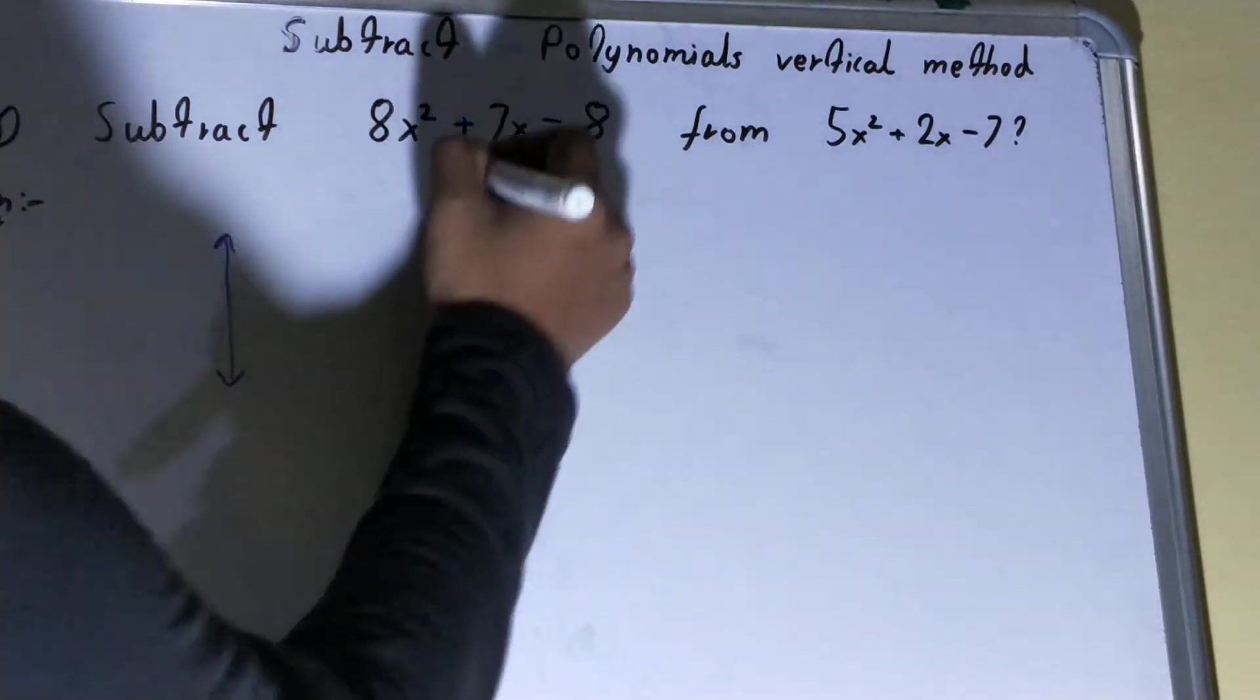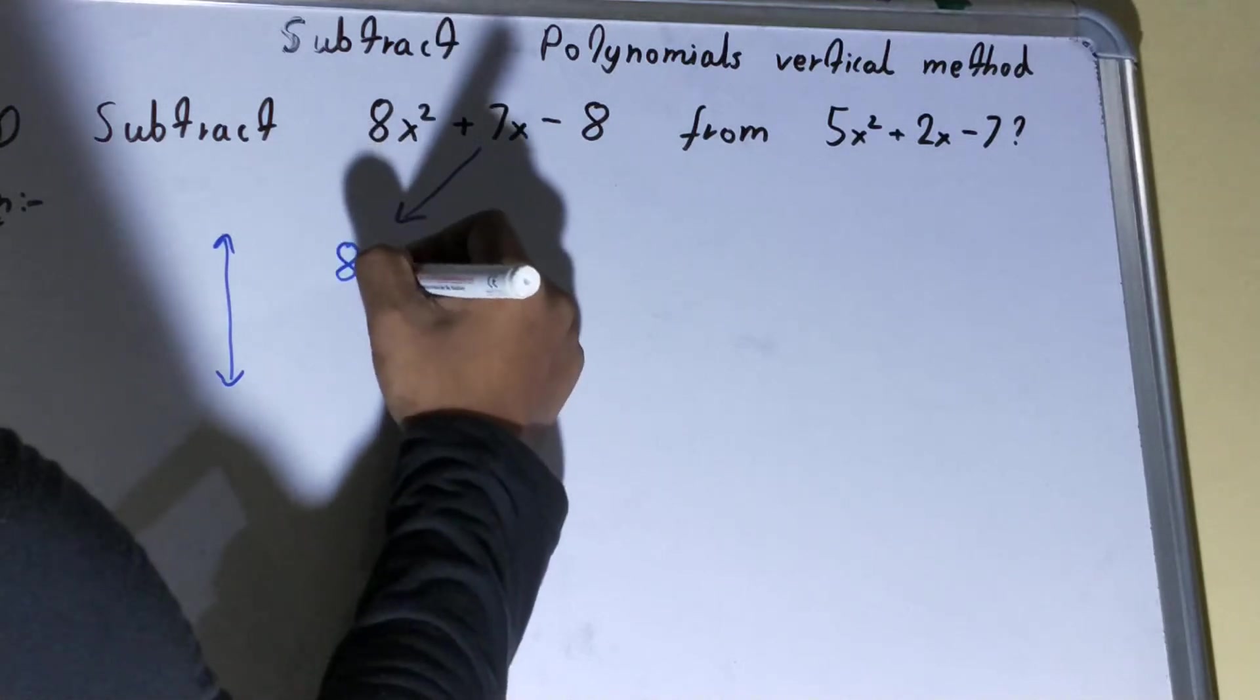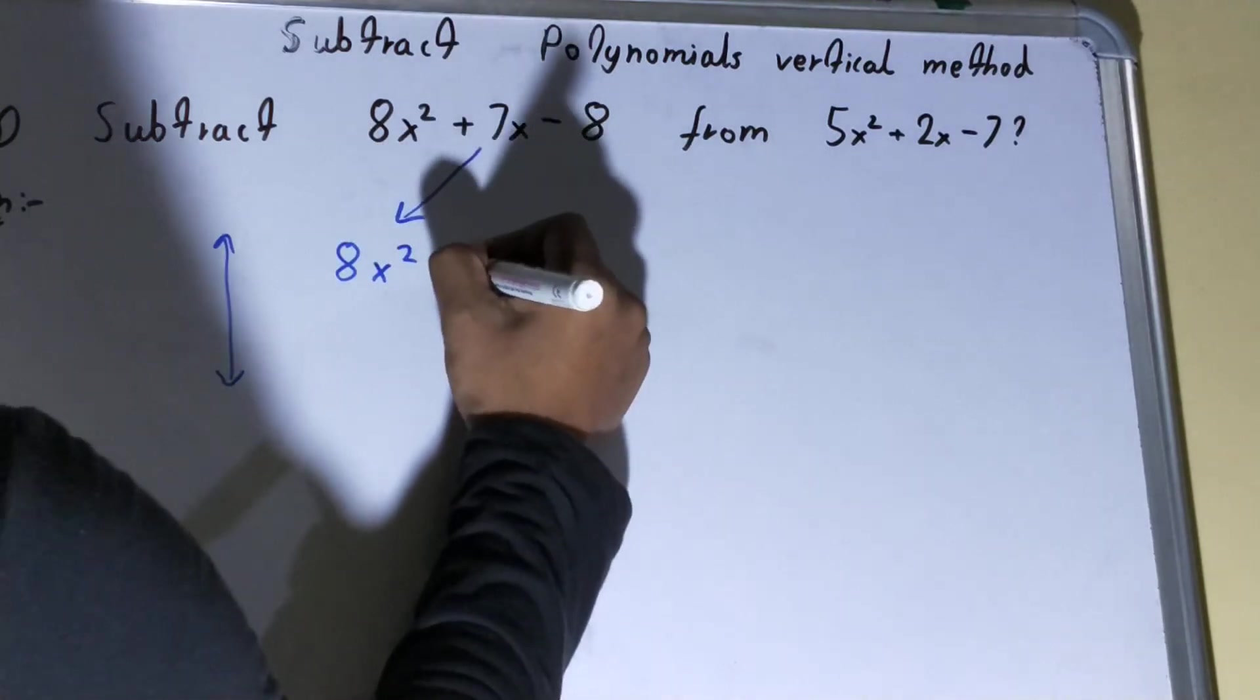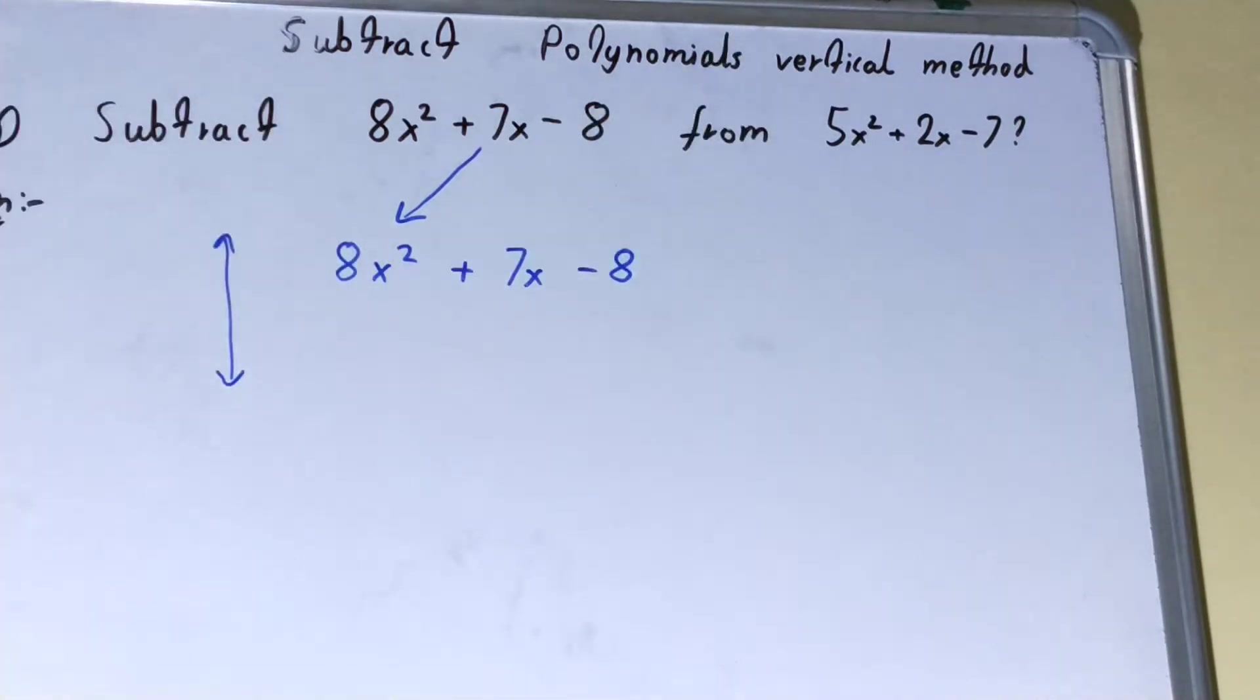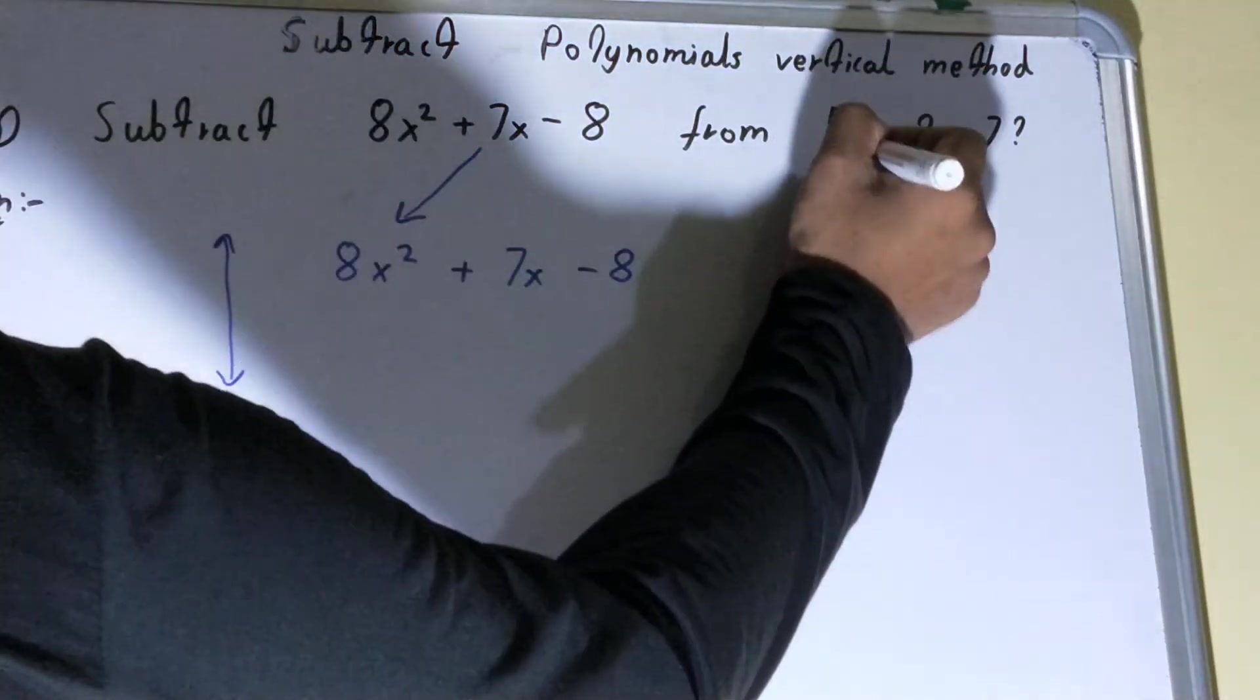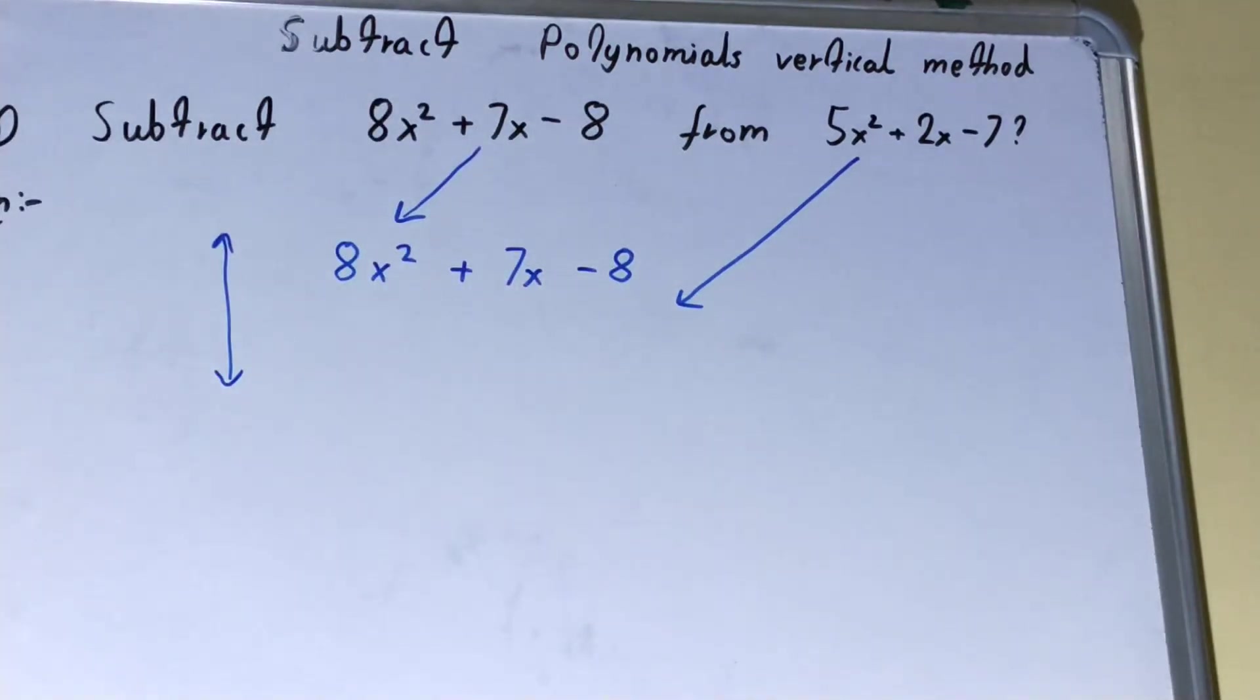To do this, pick your first polynomial and place it: 8x² + 7x - 8. Then bring the second polynomial and place it below. But remember one thing when placing the second polynomial: